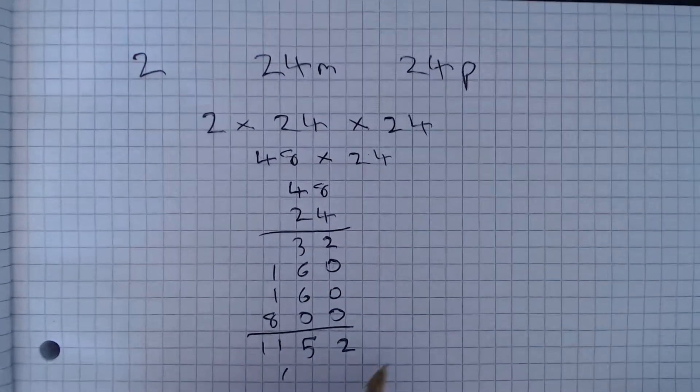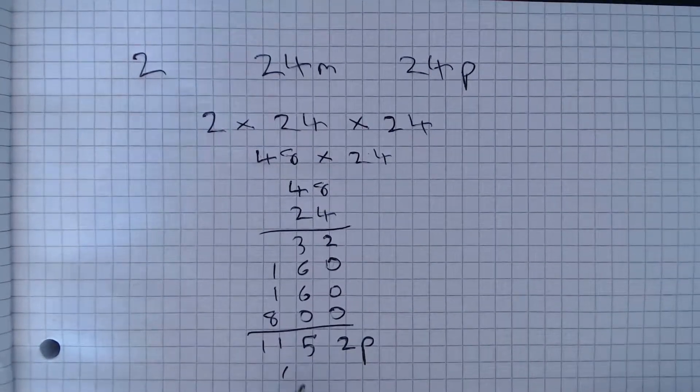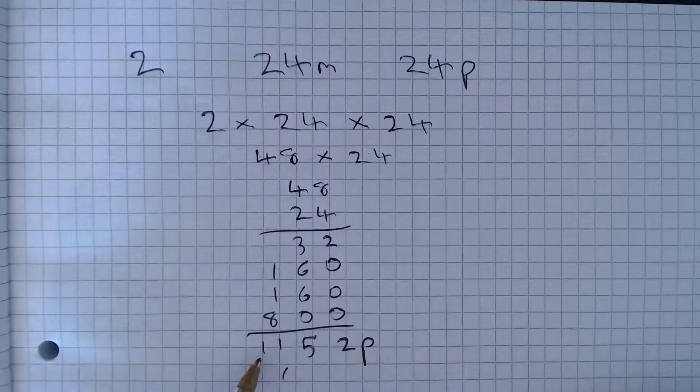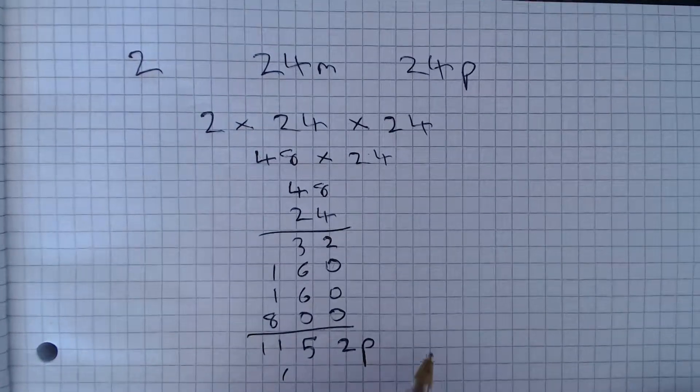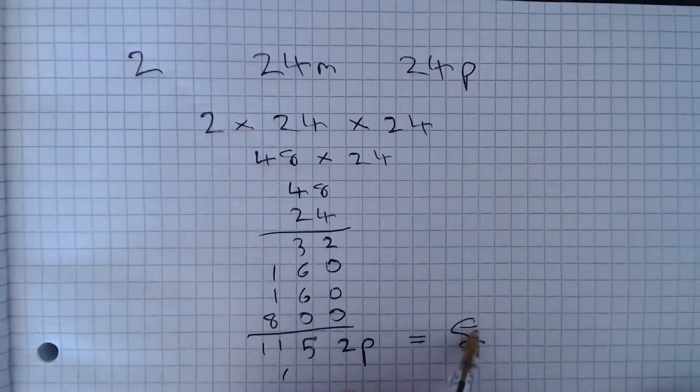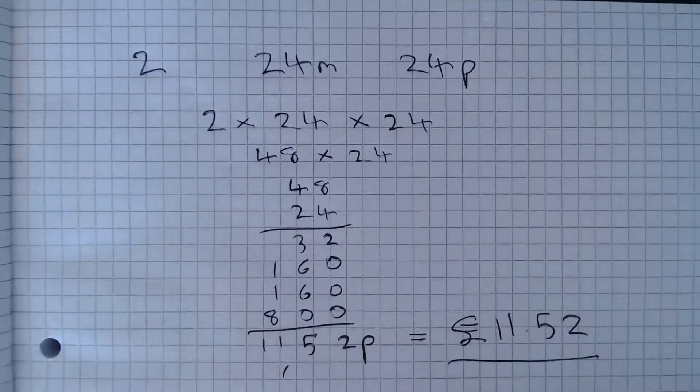Now remember this is in pence, so between them in total they earned 1152 pence, which is of course £11.52 which is the answer.